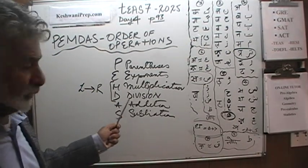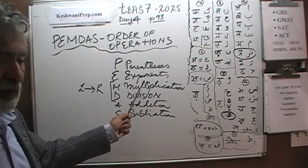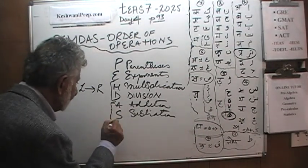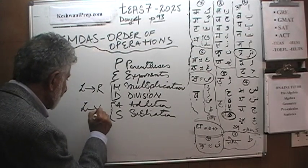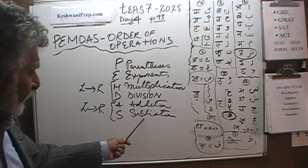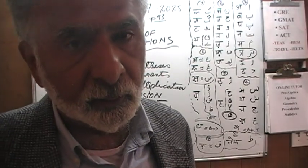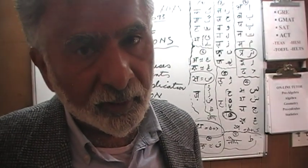If the Division comes first, we do the Division first. If the Multiplication comes first, we do Multiplication. Same thing with Addition and Subtraction. They have the same priority. If you happen to see Subtraction appearing first, we will do the Subtraction first. If the Addition appears first, we will do the Addition first. Moving from left to right.